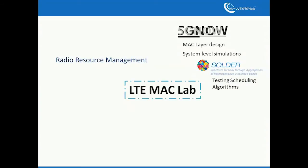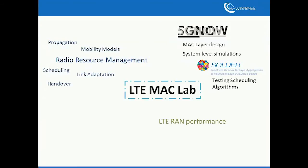It implements features such as scheduling, handover, and link adaptation, together with various propagation, path loss, shadowing, multipath, and mobility models. LTE MacLab allows users to analyze performance of LTE RAN and understand dynamic mechanisms of the radio interface, including support for heterogeneous networks and carrier aggregation.